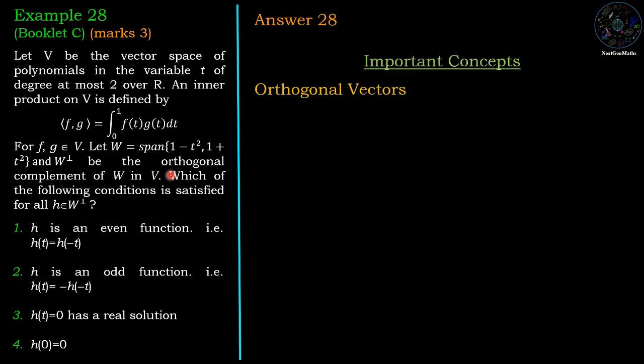Orthogonal vectors: Two vectors u and v are orthogonal if their inner product is 0.